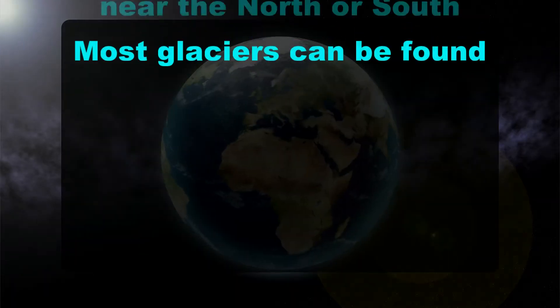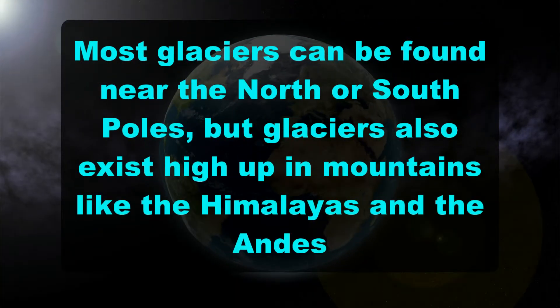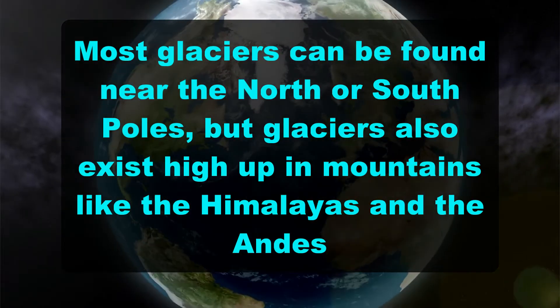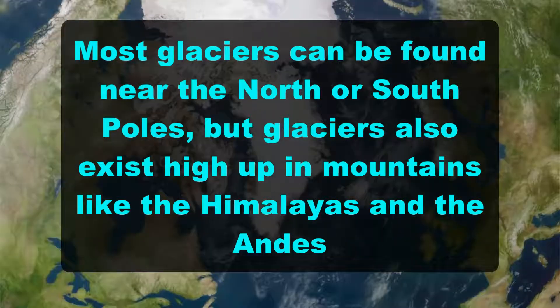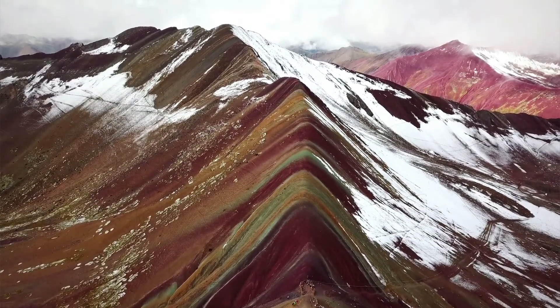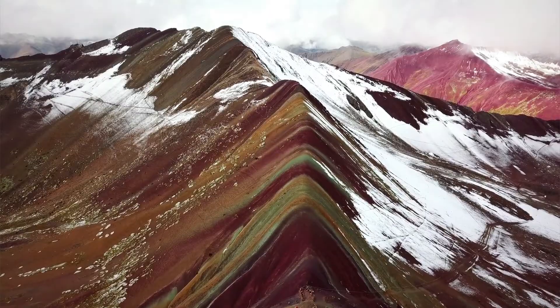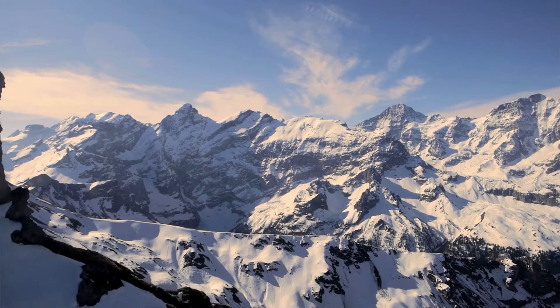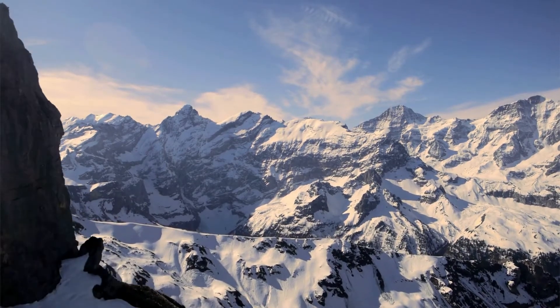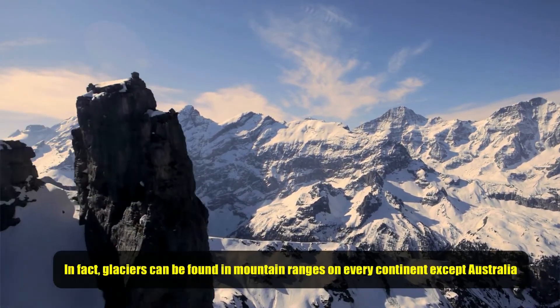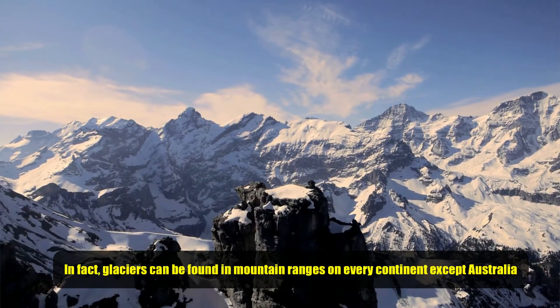Most glaciers can be found near the north or south poles, but glaciers also exist high up in mountains like the Himalayas and the Andes. Glaciers can only form in places that are cold enough and get enough snow over long periods of time. In fact, glaciers can be found in mountain ranges on every continent except Australia.